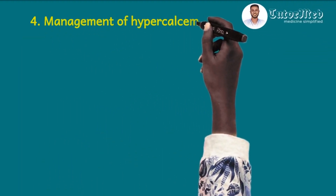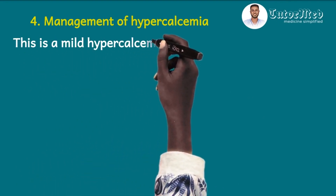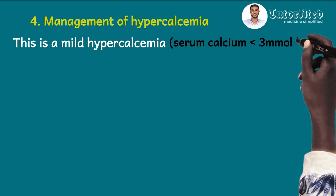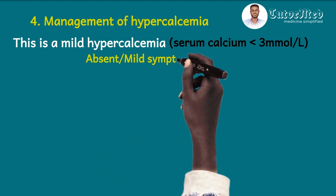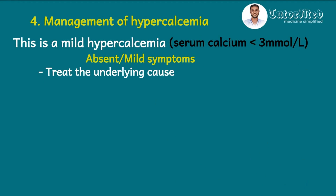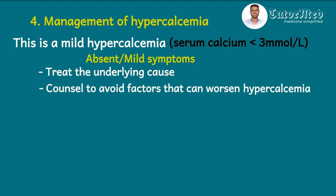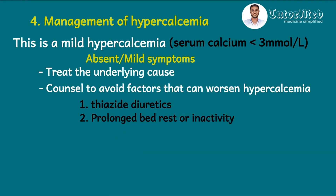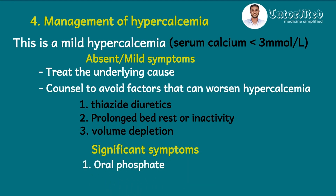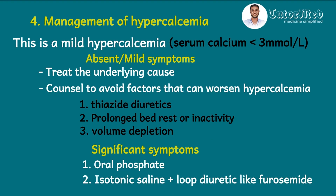Question four asked for the management of hypercalcemia. This patient has mild hypercalcemia — corrected serum calcium less than 3 mmol/L. For absent or mild symptoms: treat the underlying cause, stop aggravating factors such as thiazide diuretics, encourage mobilization, and avoid volume depletion by ensuring adequate fluid intake to minimize renal stone risk. For significant symptoms, oral phosphates as calcium binders may be given. IV isotonic saline can dilute calcium in the blood, and a loop diuretic like furosemide may be added to prevent fluid overload.